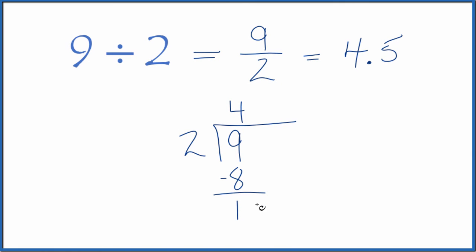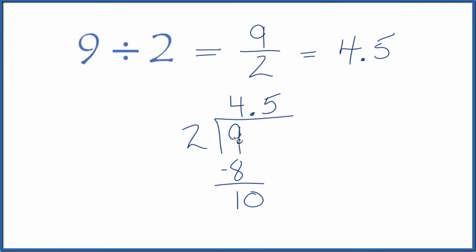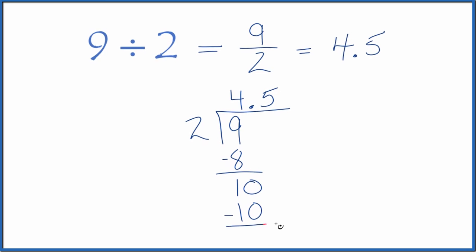2 doesn't go into 1, but if we call this 10, we can put a decimal point up here. And now 5 times 2, that's 10, subtract, no remainder.